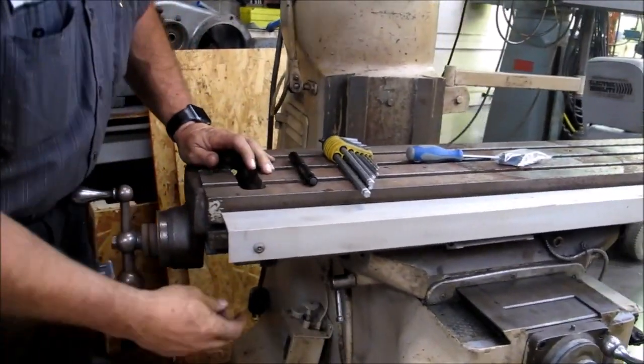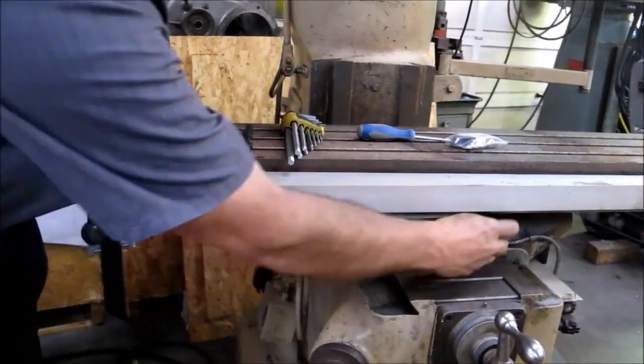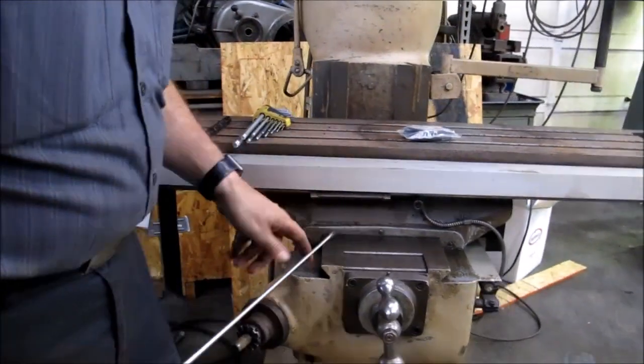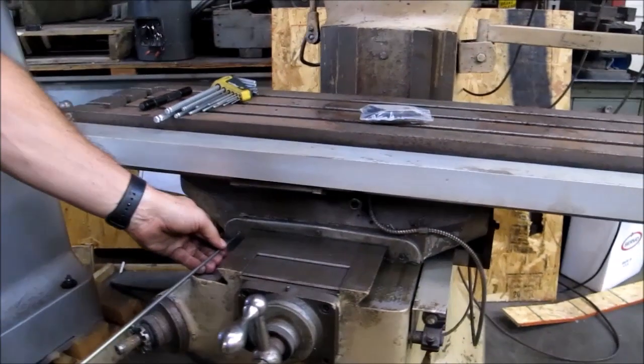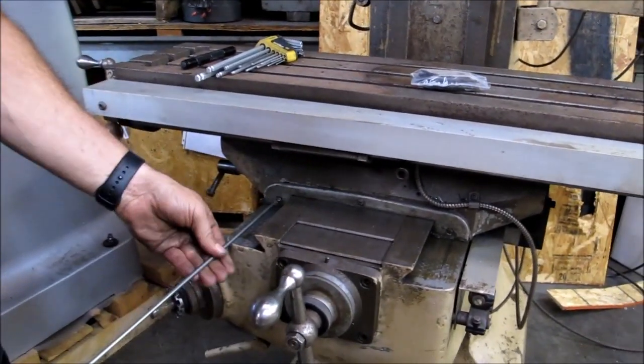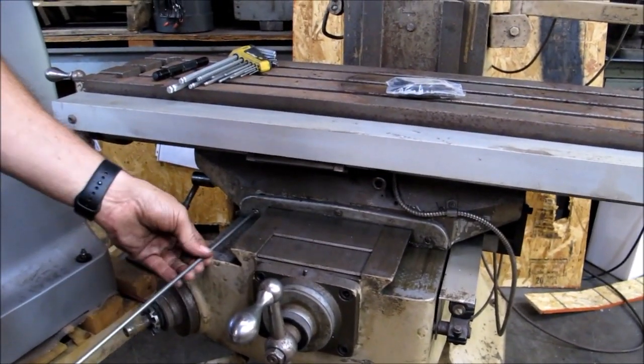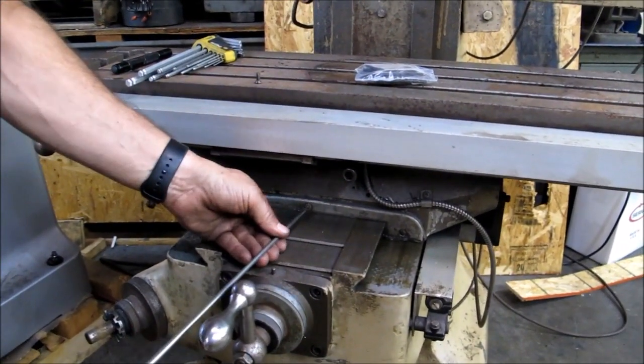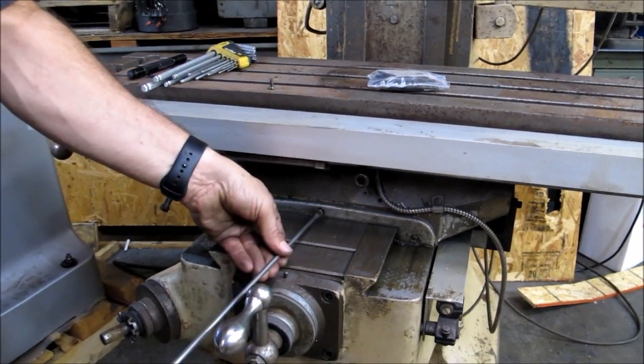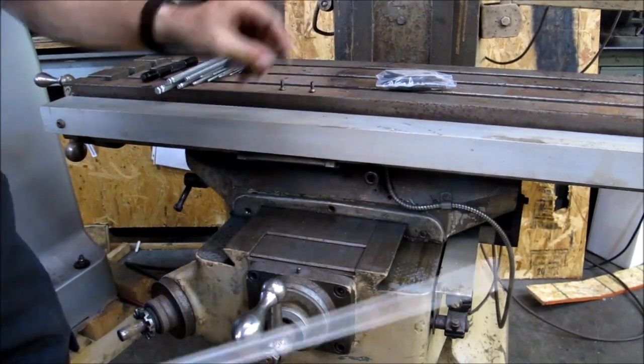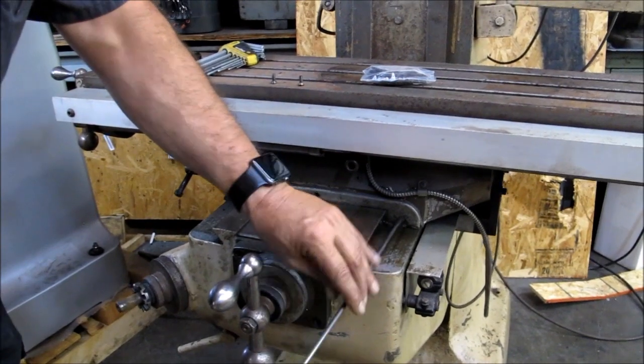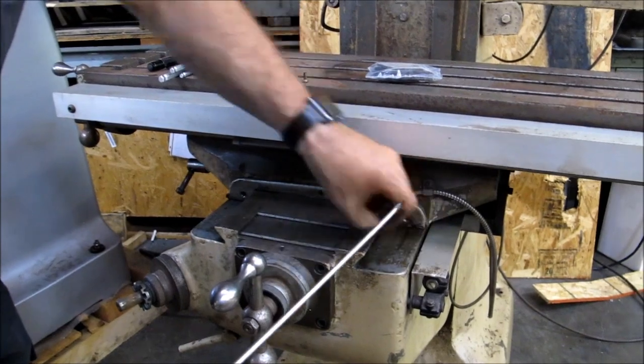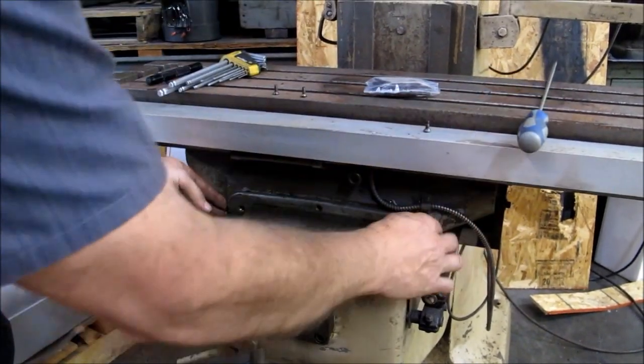Now we will go to the Y-axis, so you can unlock this, kind of lock that one, so you're working on that. The Y-axis gib screw is underneath the front cover on the left side, so you're going to remove the front cover, which is being held on by three, should be flat head screws. Okay, just slide your cover off.